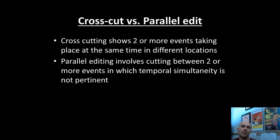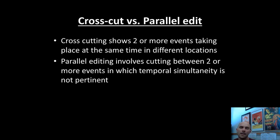Cross-cutting and parallel editing — sometimes textbooks use these terms synonymously, but it's not quite the case. Cross-cutting is showing two or more events that take place at the same time in different locations, so timing is of the essence. In parallel editing, it involves cutting between two or more events in which temporal simultaneity is not pertinent — time is not of the essence; we might be cutting between different scenes that took place days, weeks, months, years, or even centuries before. We can think of D.W. Griffith's Intolerance, where he cuts among four different lines of action throughout thousands of years of human history. This is not cross-cutting, because we know these are not taking place at the same time — it's parallel editing, moving back and forth in time to make an intellectual point.